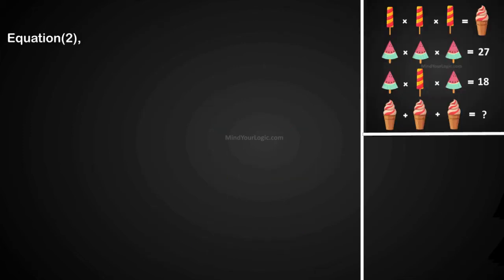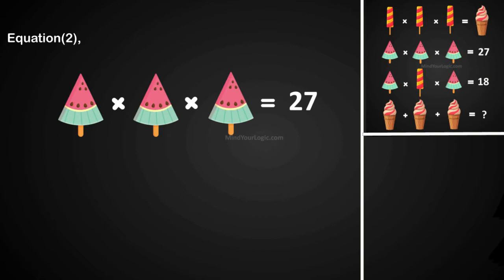Initiating with equation 2. Watermelon candy multiply by watermelon candy multiply by watermelon candy equals 27. On simplification, we get the value of watermelon candy is 3.